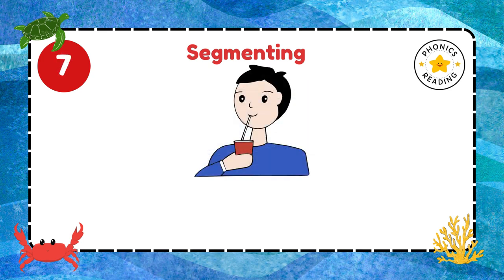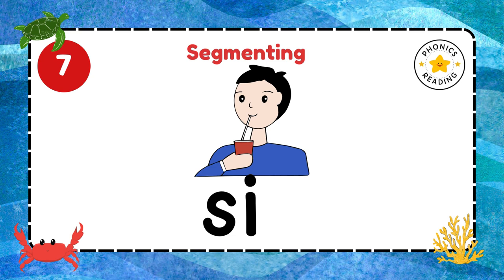Sip. Can you write sip? S is the first sound. I is the second sound. And sip — P is the last sound. Have you written it? Show me. Very good.